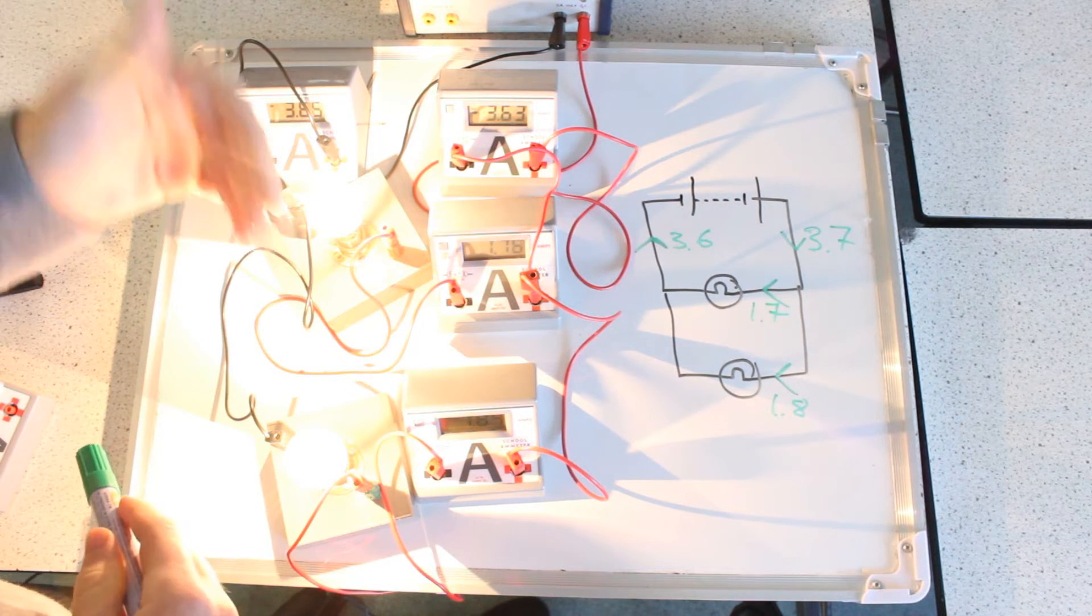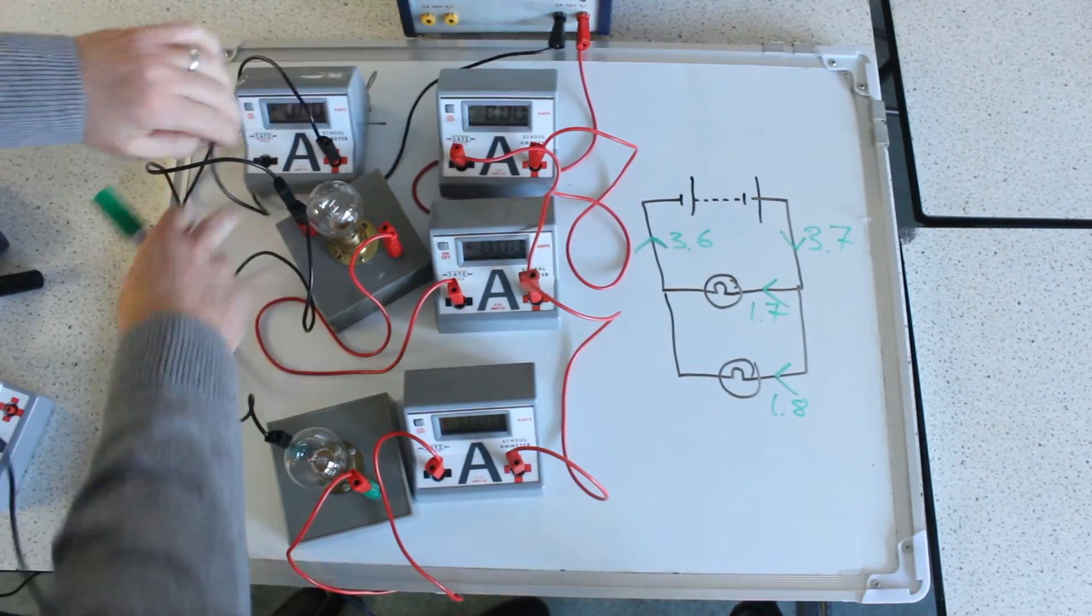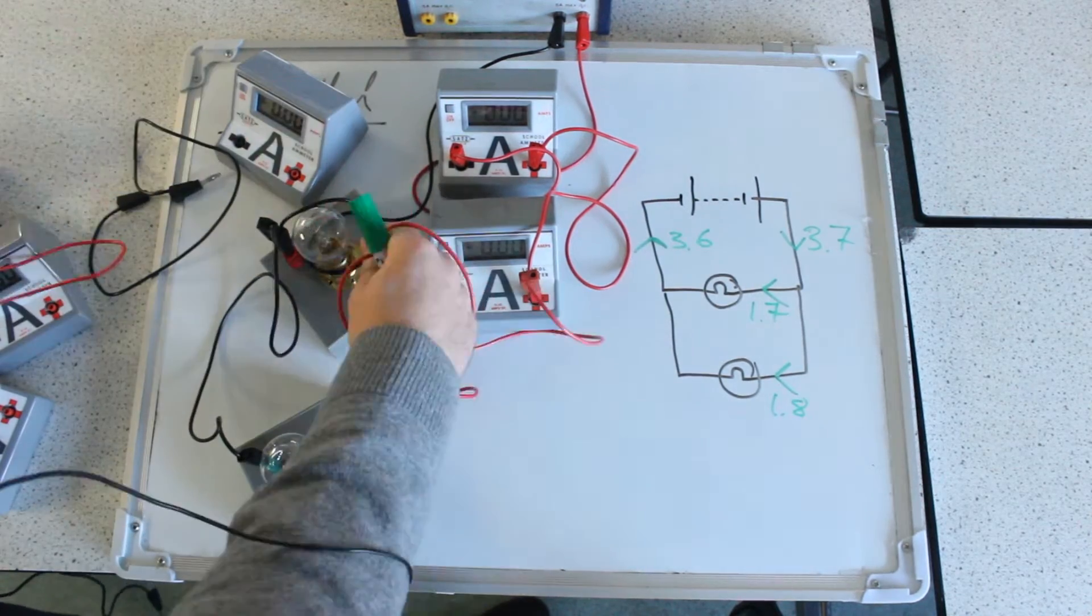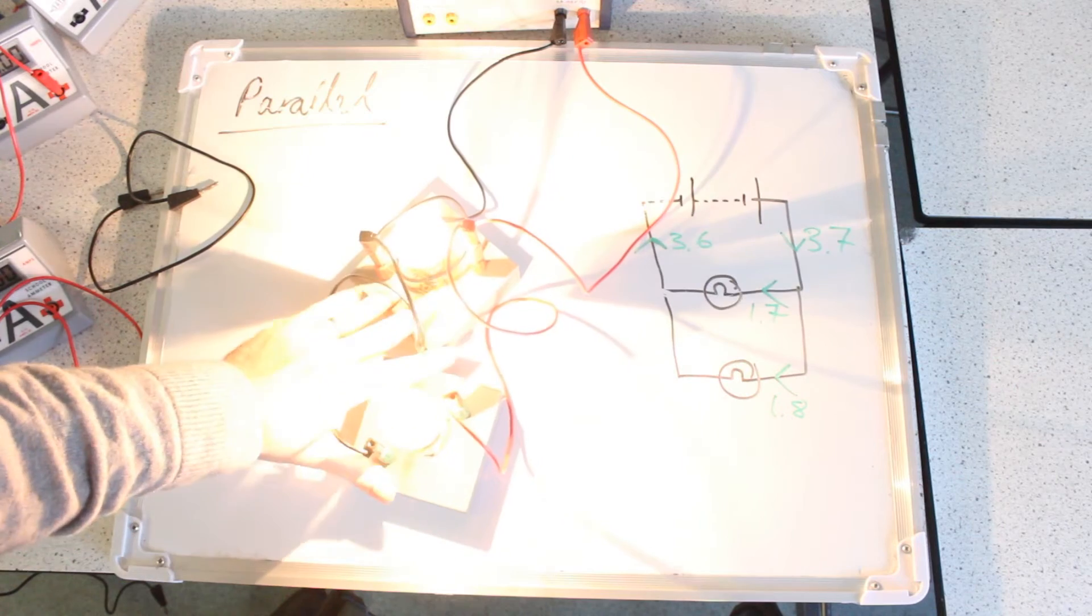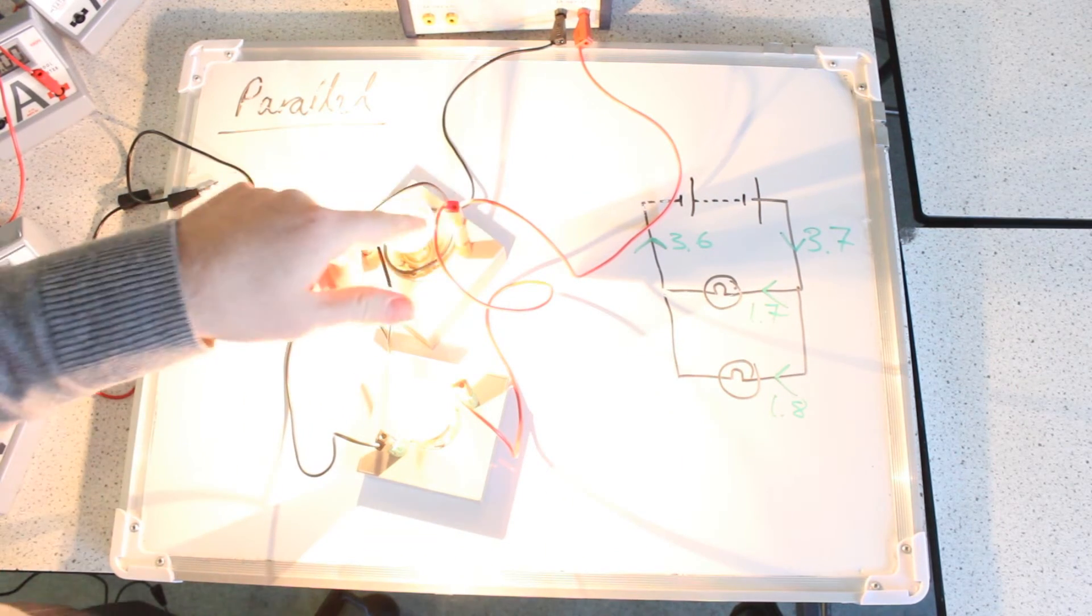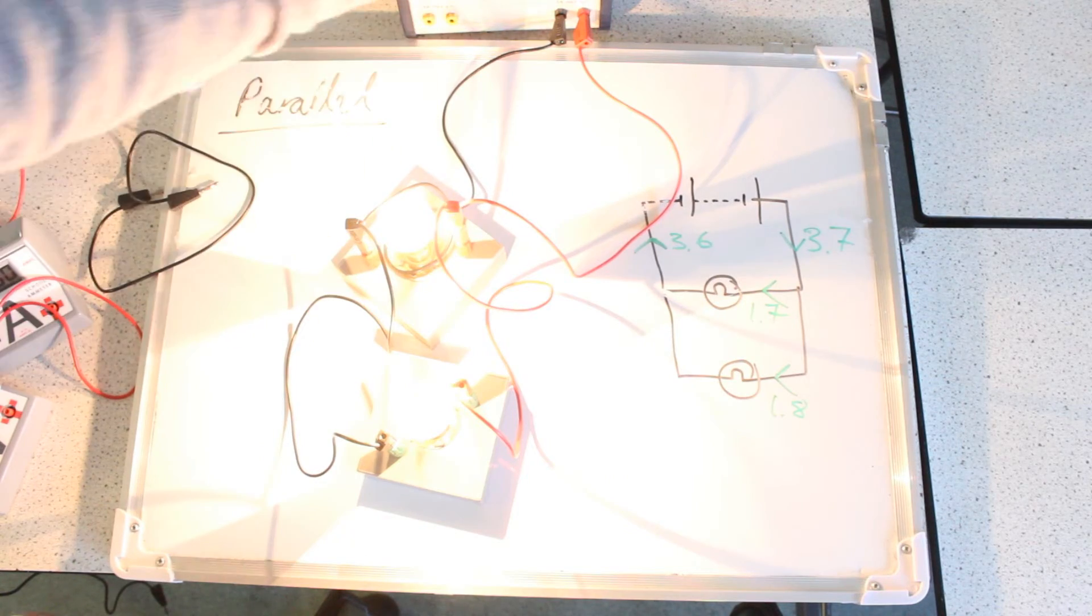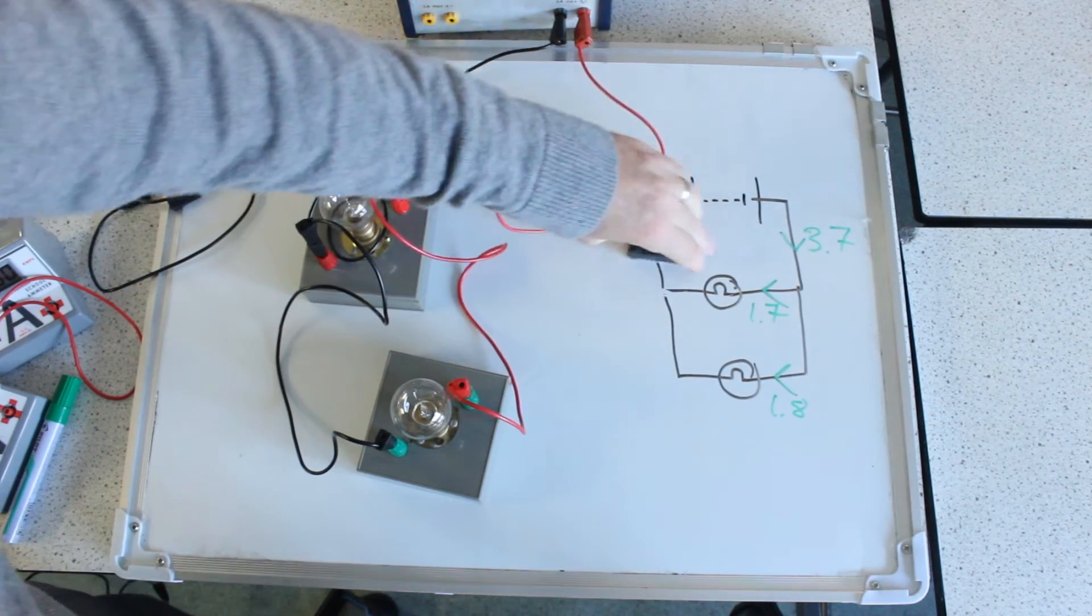So again, we're going to write a simple rule to help us remember how that works. So now I'm going to measure the voltages across each of the three components, the power pack and the two bulbs. Have a predict of what you think their relationship will be.